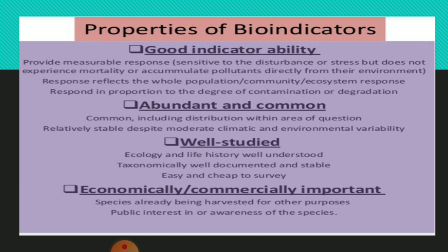The properties of bio-indicators: They should have good indicator ability — meaning their indications should be observable. They should be abundant and common — not a rare species, but one that is abundantly and commonly available. They should be well-studied, meaning their physiology and morphology should be known under normal conditions and when exposed to pollutants. They should also be economically and commercially important.